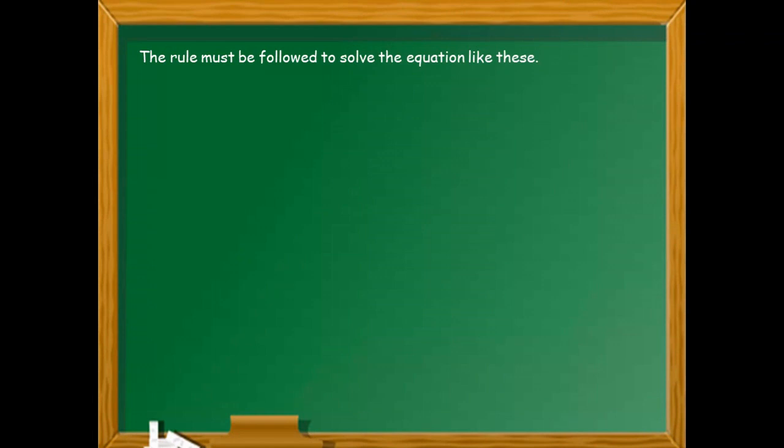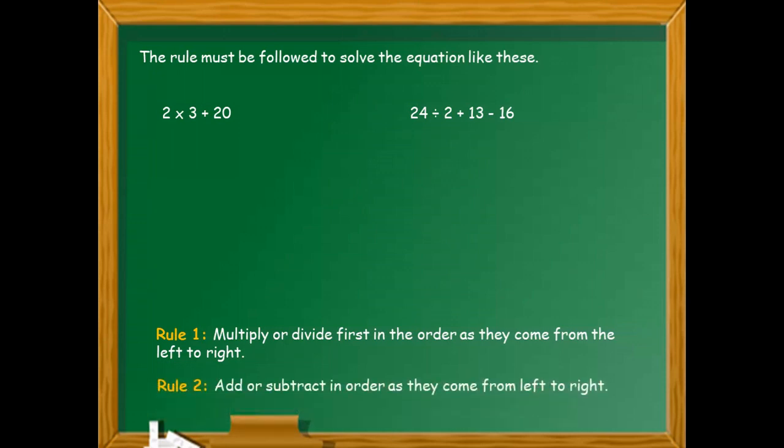The rule must be followed to solve the equation like these: 2 times 3 plus 20, and 24 divided by 2 plus 13 minus 16. Kung titignan mo, magulo. Pero kapag tutulungan tayo ng MDAS kung paano gawin to, meron tayong dalawang rules. So ang unang rule natin ay magmumultiply tayo o magdidivide in the order as they come from the left to right, simula sa left pagpunta sa right.